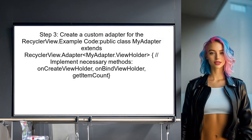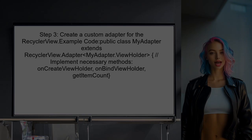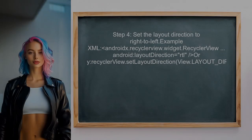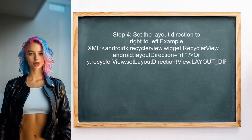Now you should create an adapter for the recycler view. This adapter will bind the data to the views in the recycler view. You can create a custom adapter class that extends RecyclerView.Adapter. Finally, to achieve the right-to-left scrolling effect, you can set the layout direction of the recycler view to RTL. This can be done in the XML layout or programmatically.